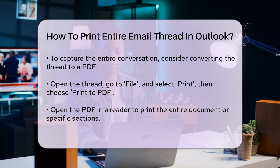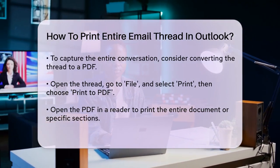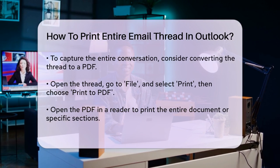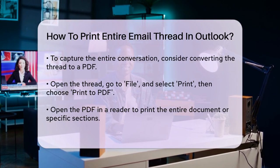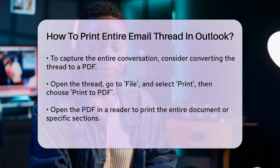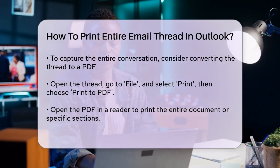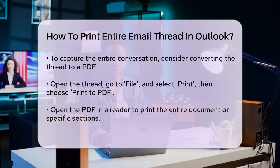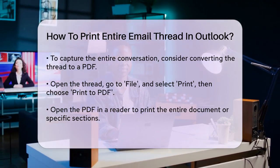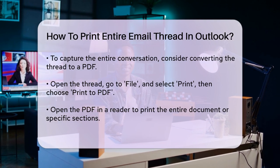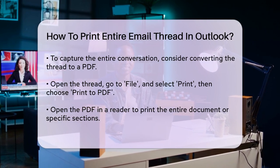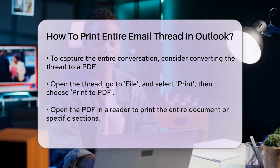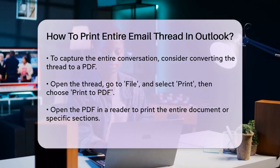To do this, open the email thread in Outlook, go to the File tab, and select Print. Instead of printing directly, choose the Print to PDF option. This will convert your email thread into a PDF file, which you can then open in a PDF reader. In the PDF reader, you can select the entire document or specific sections to print. This method ensures that the formatting and structure of the email thread are preserved.